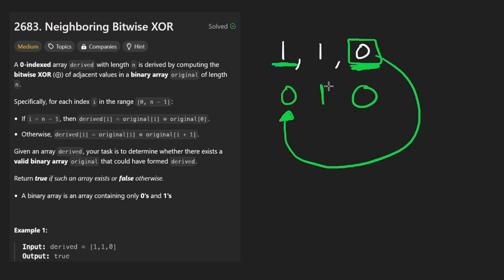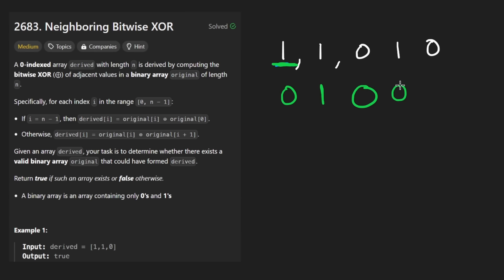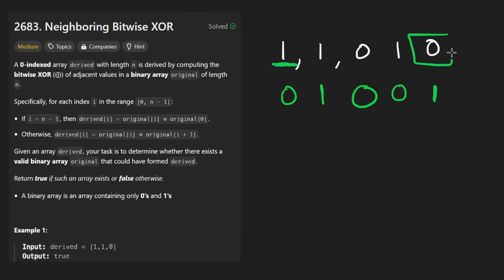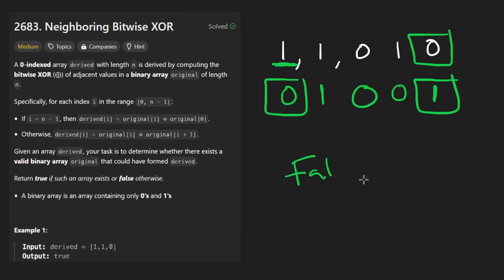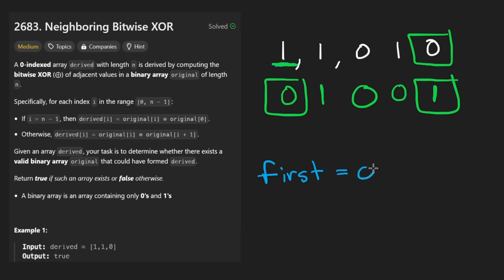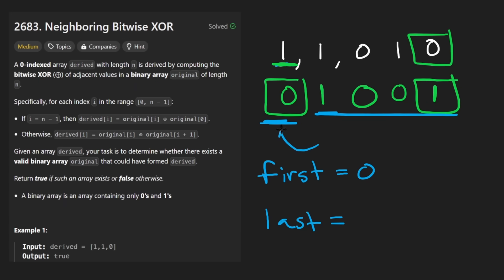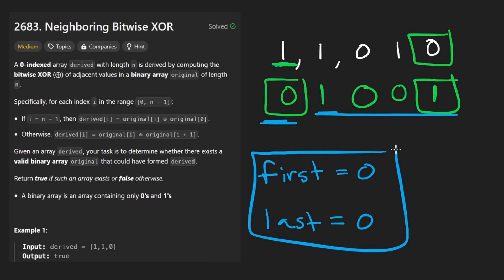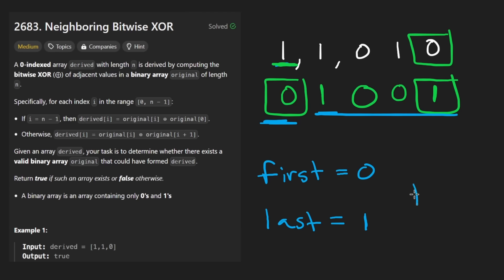Let me extend the example a bit. If I put a one here and a zero here — the zero told us these two must be the same, so I put zero. Now the one tells me these two should be different, so I put a one. And now with this zero, it tells me these two should be the same, but they are not. Thus we return false. So we won't know until the very end if we have a contradiction. In code: first equals zero, last equals zero initially, and at the end we return whether first equals last.